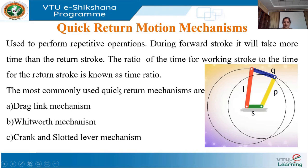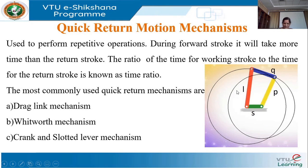The most commonly used quick return motion mechanisms are the drag link mechanism, the Whitworth mechanism, and the crank and slotted lever mechanism. The drag link mechanism is an inversion of Grashof's chain where the shortest link is fixed, making it an example of a double crank mechanism.